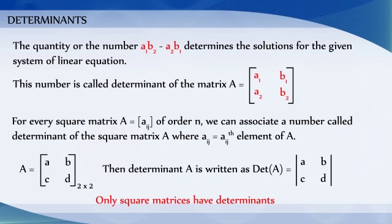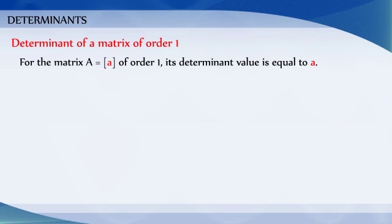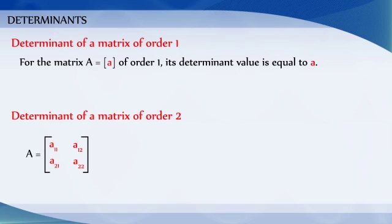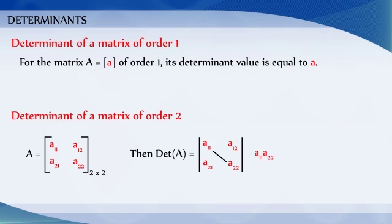Only square matrices have determinants. For a matrix of order 1, let A equal to [a] be the matrix of order 1; then determinant of A is defined to be equal to a. For a 2×2 matrix A with elements a11, a12, a21, a22, the determinant of A is defined as a11 times a22 minus a21 times a12.